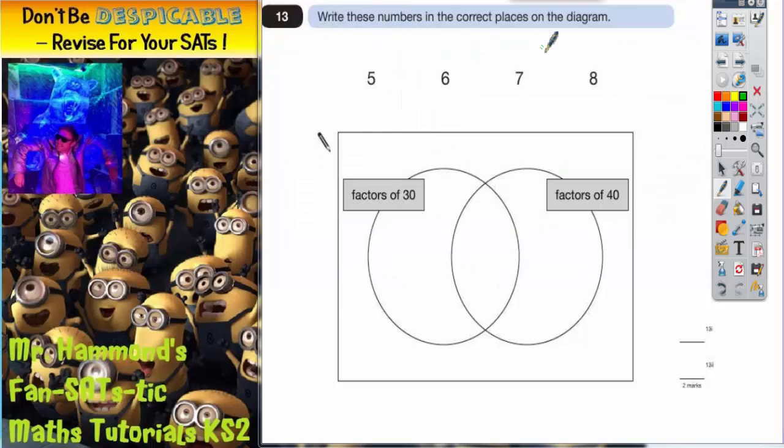Question 13. Write these numbers in the correct places on the diagram: 5, 6, 7 and 8.